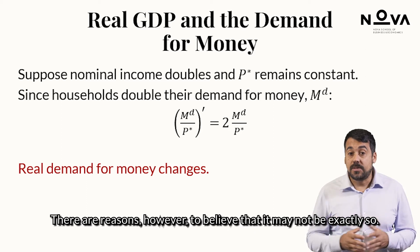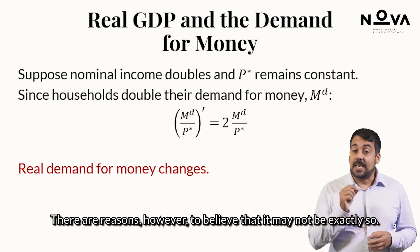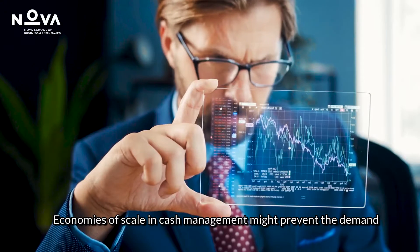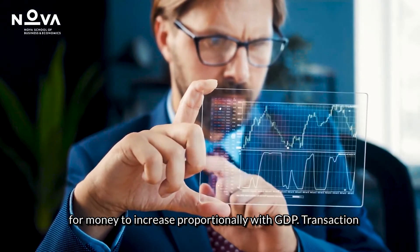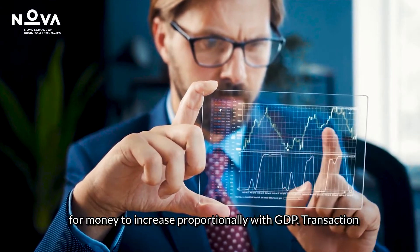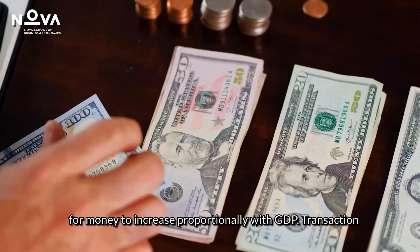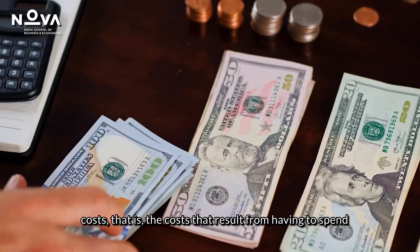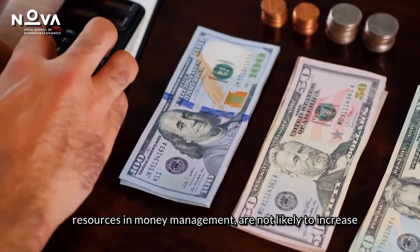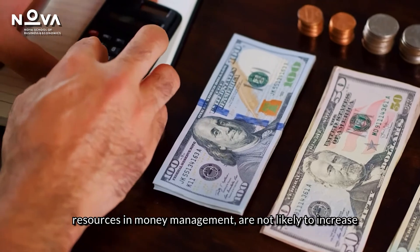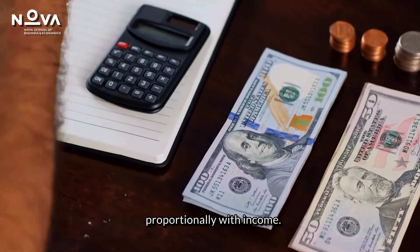There are reasons, however, to believe that it may not be exactly so. Economies of scale in cash management might prevent the demand for money to increase proportionally with GDP. Transaction costs, that is, the costs that result from having to spend resources in money management, are not likely to increase proportionally with income.